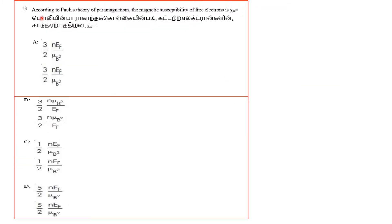Question 13: According to Pauli's theory of paramagnetism, the magnetic susceptibility of free electrons — chi_M — is equal to what? This concerns Pauli paramagnetism. The magnetic moment per atom is given by mu_J = g·J·mu_B.